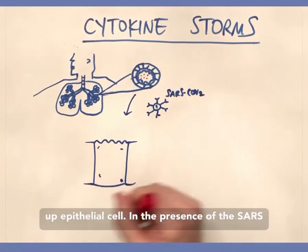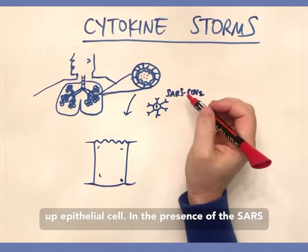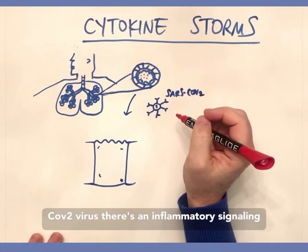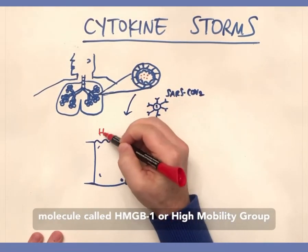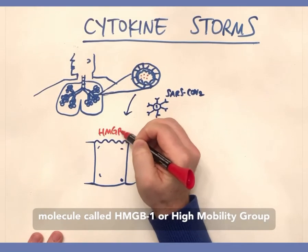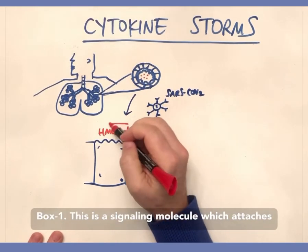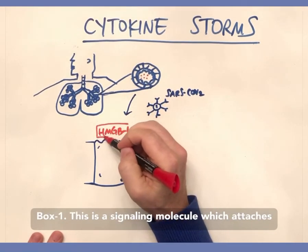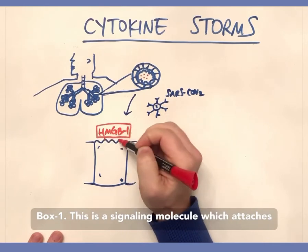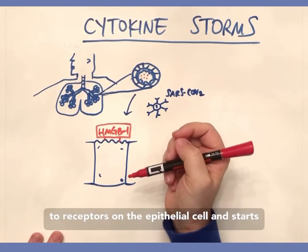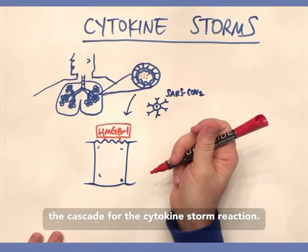Here we have a blown-up epithelial cell. In the presence of the SARS-CoV-2 virus, there is an inflammatory signaling molecule called HMGB1, or High Mobility Group Box 1. This is a signaling molecule which attaches to receptors on the epithelial cell and starts the cascade for the cytokine storm reaction.